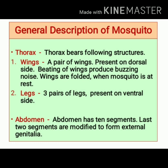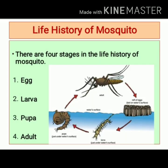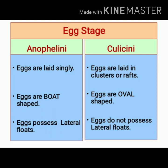The abdomen of the mosquito has 10 segments, and the last two segments are modified to form external genitalia. Life history of mosquito includes four stages: egg, larva, pupa, and adult. Let's see the differences related to these stages between the two tribes, Anophiline and Culicine.